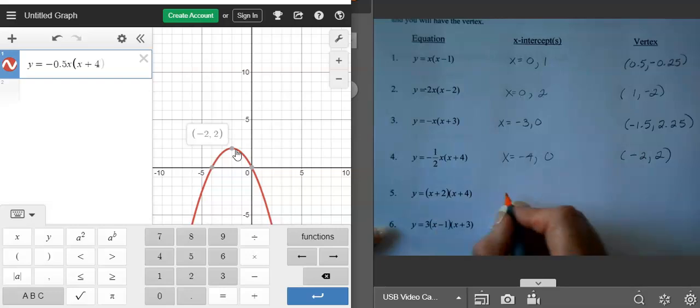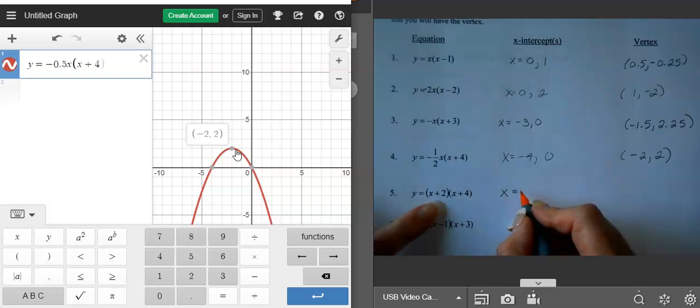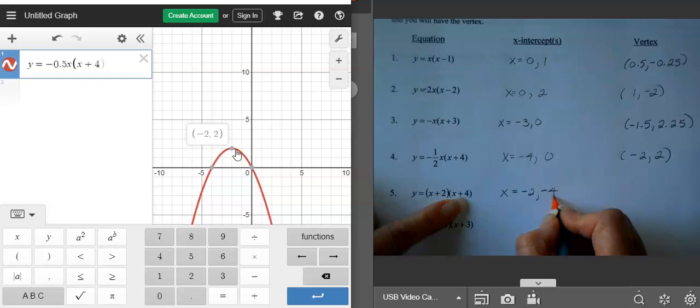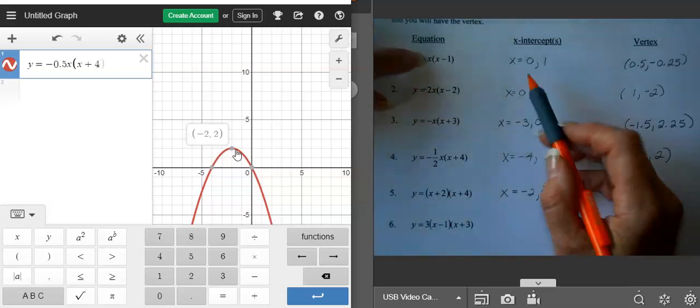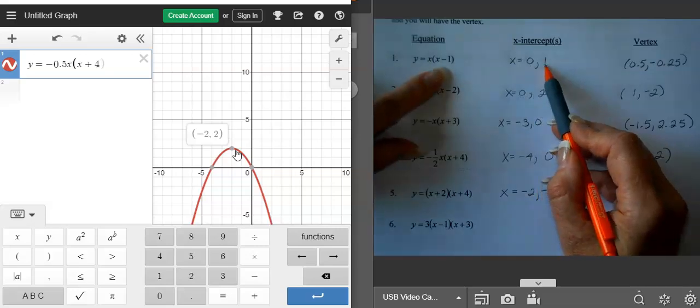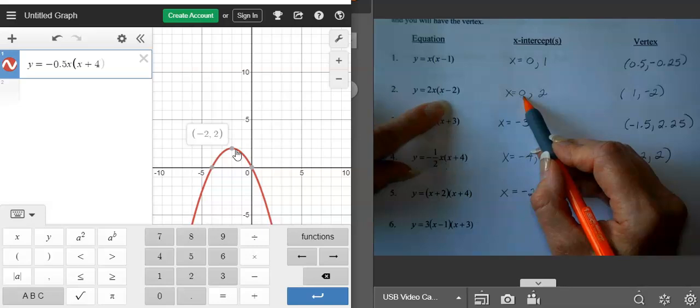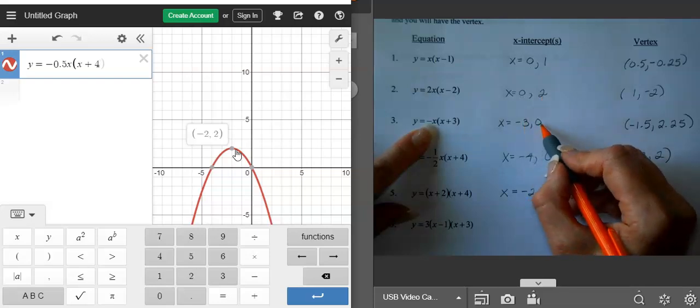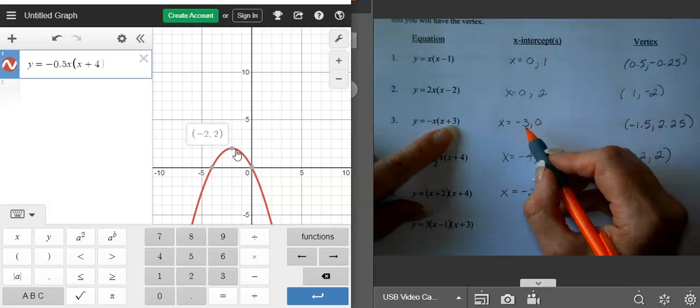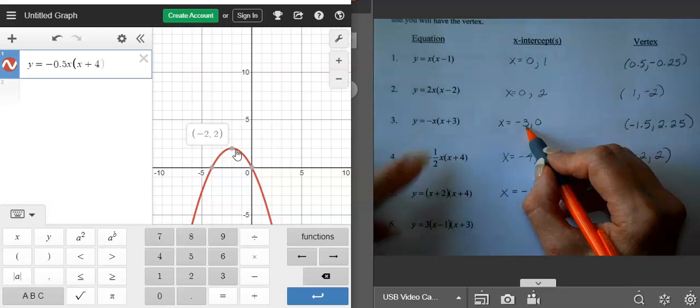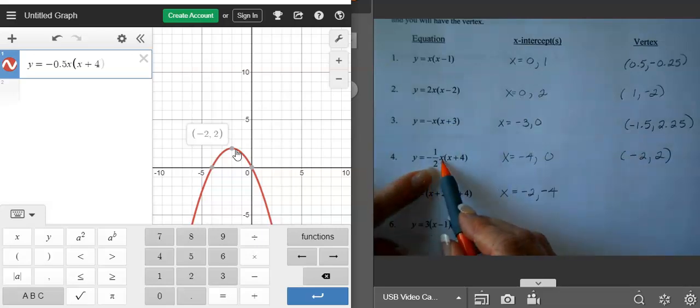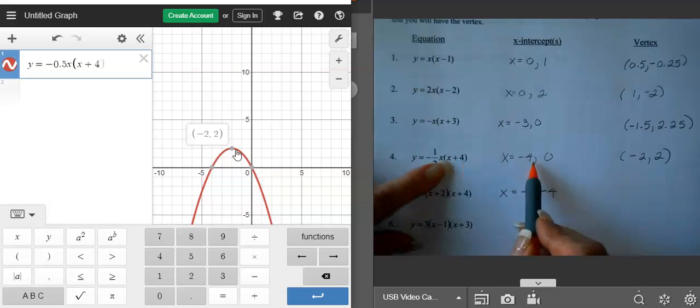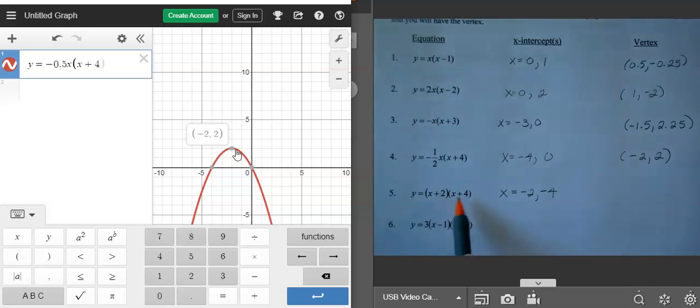For this next one, our x-intercepts are what makes each of these factors 0. And so the x-intercept for this is going to be negative 2, and the x-intercept for this one is negative 4. I could have done that for all of these. My two factors, so x equals 0, 1 makes that one 0. This one, if x is 0, 2x is 0, and then if x is 2, 2 minus 2 is 0. So this next one, if negative x is 0, or if I have x as negative 3, negative 3 plus 3 is 0. On this one, if I have x as 0, negative 1 half times 0 is 0. And for this factor, negative 4 will make it 0. So you're looking to see what each of these factors, what makes them 0.